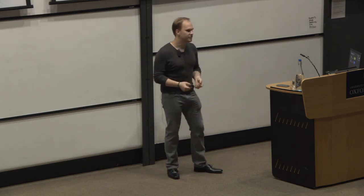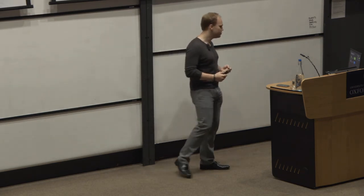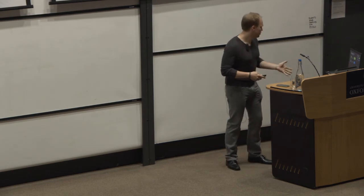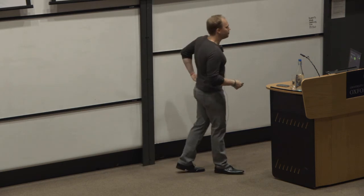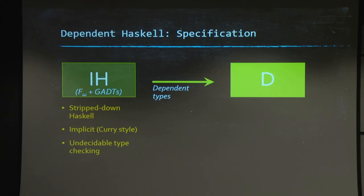Same way than before, you can annotate any D term to a DC term by adding, you know, all the annotations that are required. And conversely, you can erase all these annotations and get back a D term. Quick comparison as before, again, D has a more powerful type system than IH. But aside from that, it has very similar characteristics. It's essentially a stripped down dependent Haskell. It is implicit. And surprise, it has undecidable type checking.